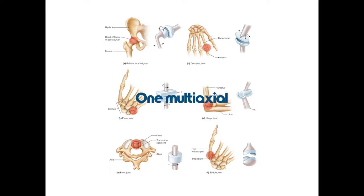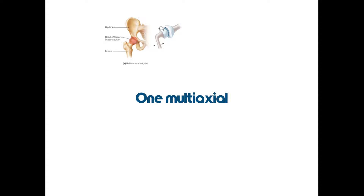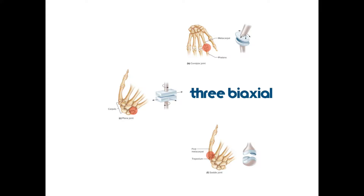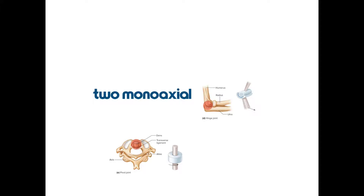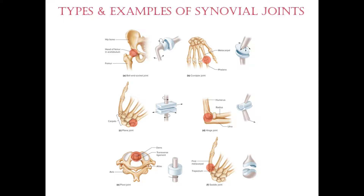Starting off we have one multi-axial joint — this is the most mobile — the ball and socket joint. Secondly we have three biaxial joints: the condylar, the plane, and the saddle joint. All of these are found in the hand and wrist. Lastly there are two mono-axial joints, meaning they function in basically one axis — the hinge joint and the pivot joint.